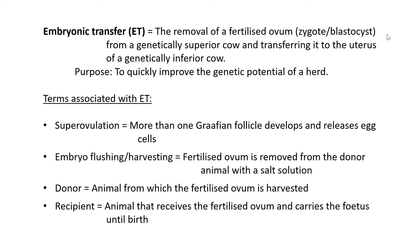The purpose of embryonic transfer is to quickly improve the genetic potential of a herd. The farmer can use this method to rapidly — within one or two years — improve his herd so that all individuals can produce a lot of milk. Even bulls born this way can produce heifer offspring that produce a lot of milk. It's a quick method to improve the genetics of a farmer's cattle, and it can apply to any animal.